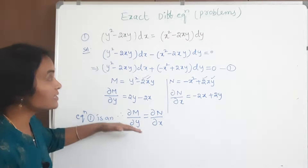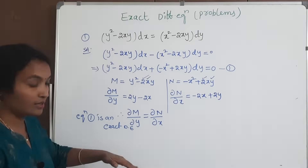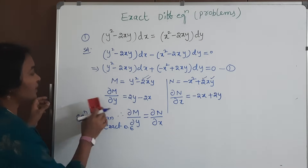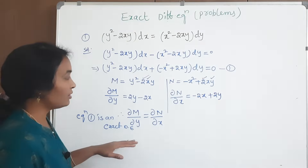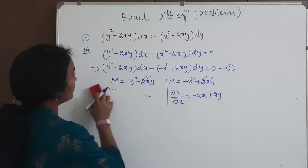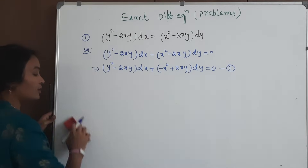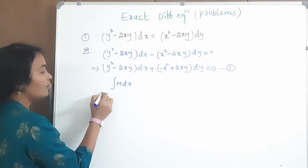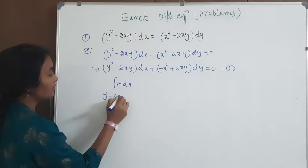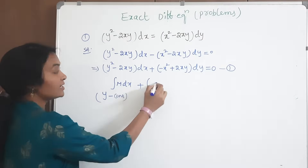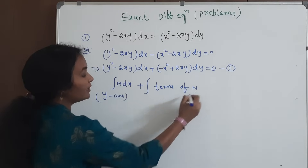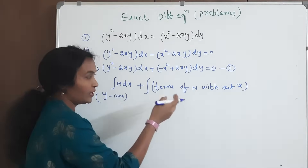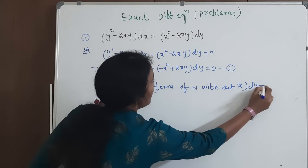Since this is an exact differential equation, we need to find the solution. The solution is: integral of M dx (treating y as constant) plus integral of terms of N without x, with respect to dy, equals c.